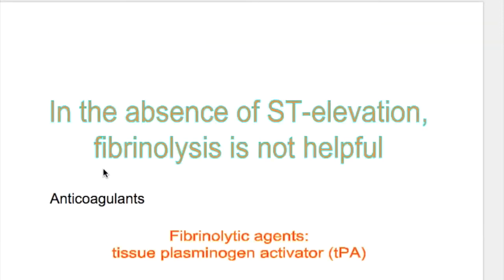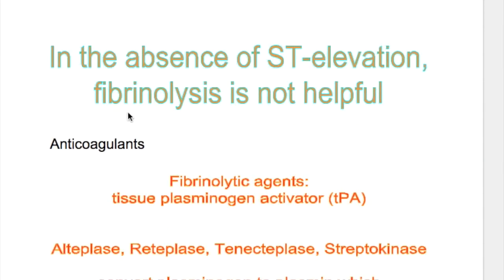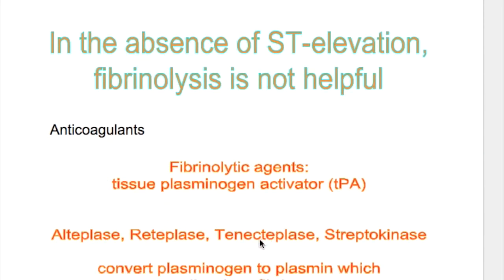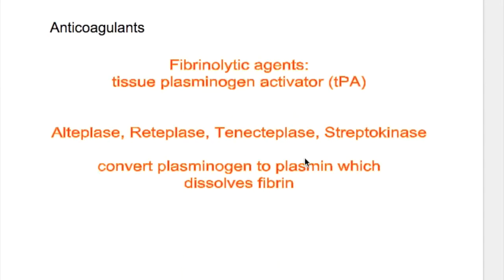Regarding treatment differences: in transmural infarct the treatment is fibrinolysis, whereas in the absence of ST elevation fibrinolysis is not helpful. So in subendocardial infarct, anticoagulants are given. Fibrinolytics are plasminogen activators — they convert plasminogen to plasmin, and plasmin is the substance which dissolves the fibrin clot.